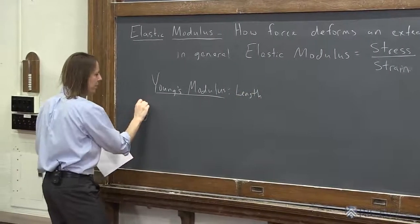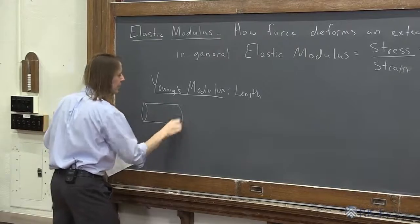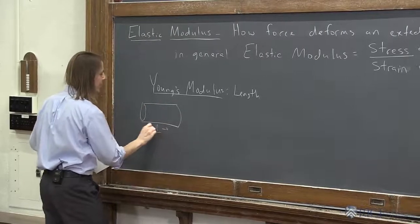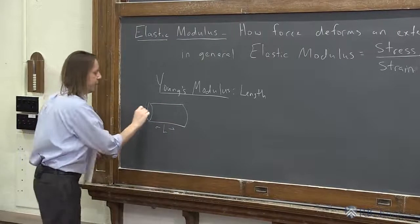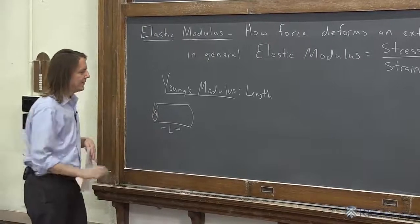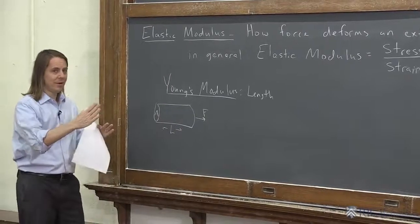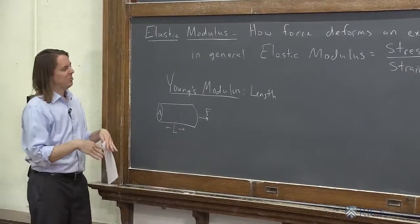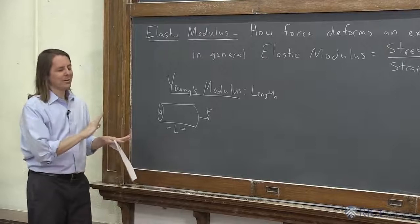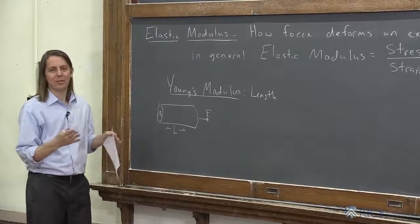So Young's modulus is usually when you're extending the length. So say I have a rod of some material that looks like this, and it's got a length L, and it's got a cross-sectional area A. If I apply a force to it, like that, if I pull on it, if we're not thinking about deformations, we say, well, you can't really pull on it, nothing's going to happen.